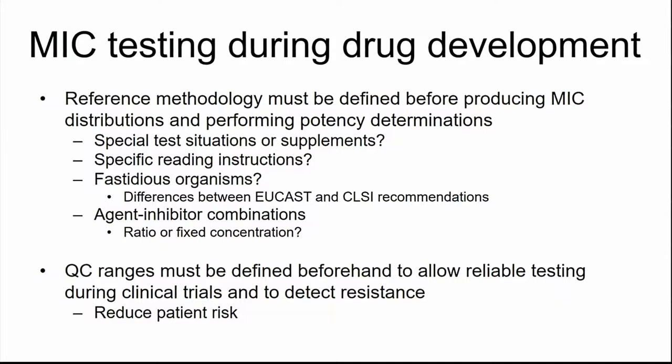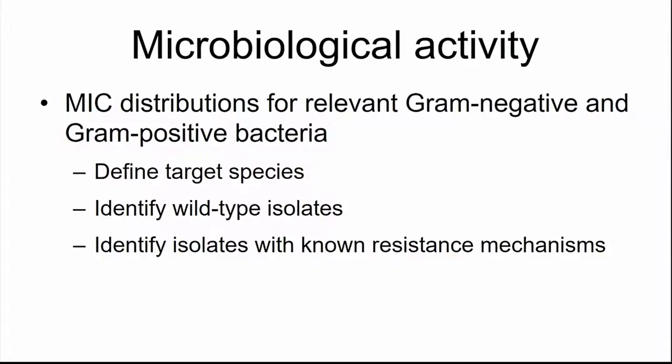You have to investigate: are there special test situations? Do we need supplements? Are specific reading instructions necessary? If you test fastidious organisms, be aware there are differences between CLSI and EUCAST media recommendations. For agent-inhibitor combinations, you must decide whether to use a ratio or fixed concentration of the inhibitor. Before clinical trials, you must establish QC ranges — otherwise you cannot perform reliable testing, cannot detect resistance, and will put patients at risk.